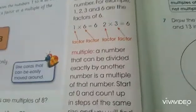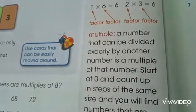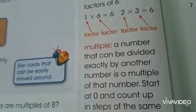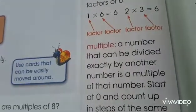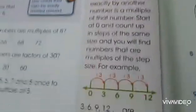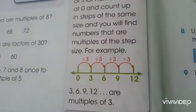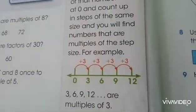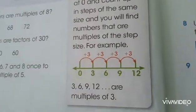How about multiple? Multiple is a number that can divide exactly by another number is a multiple of that number. Jadi, kalau multiple itu angka-angka kelipatan dari sebuah angka. Contohnya, 0, 3, 6, 9, and 12. 3, 6, 9, and 12 are multiples of 3.